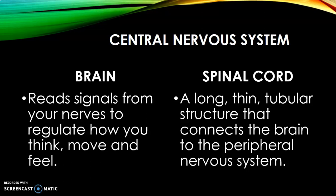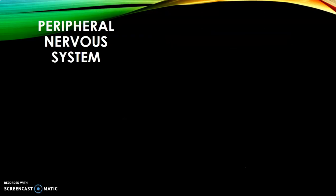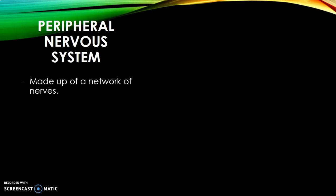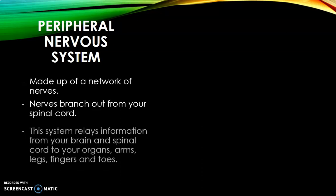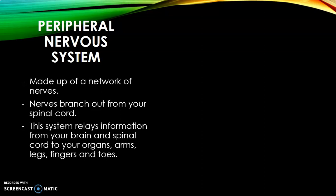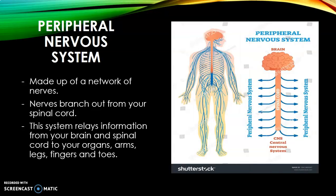The peripheral nervous system is made up of a network of nerves branching out from your spinal cord. This system relays information from your brain and spinal cord to your organs, arms, legs, fingers, and toes, showing the responses based on the stimuli received. The PNS is basically everything outside of the brain and spinal cord.